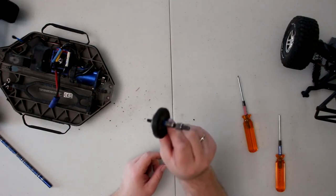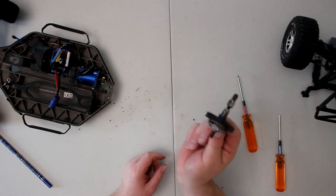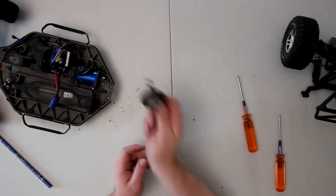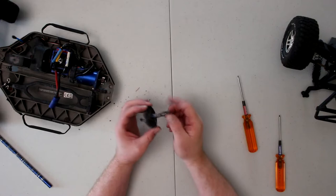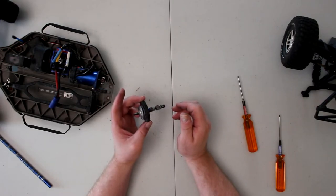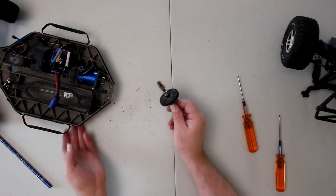Now, Traxxas does sell a completely rebuilt spur. You can just do a fast swap, pop it in, and you're off to the races. Or basically, you can dismantle this guy, change out your spur, and put it back in.